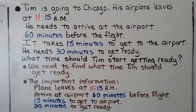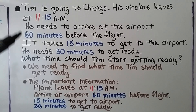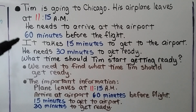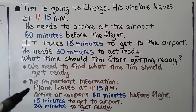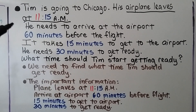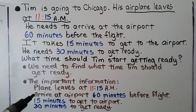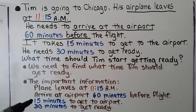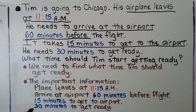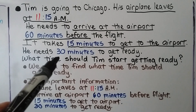Problem: Tim is going to Chicago. His airplane leaves at 11:15 a.m. He needs to arrive at the airport 60 minutes before the flight so he has enough time to get his ticket and board. It takes 15 minutes to drive to the airport, and he needs 30 minutes to get ready. We underline the important facts: plane leaves at 11:15 a.m., needs to arrive 60 minutes early, 15 minutes to drive, and 30 minutes to get ready.